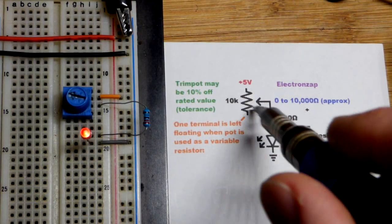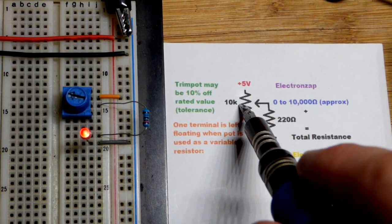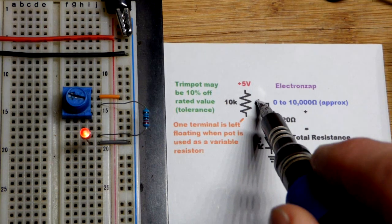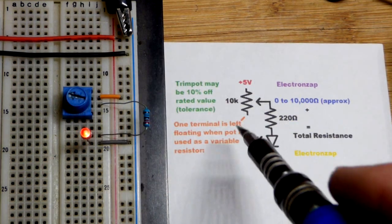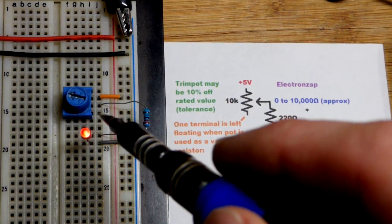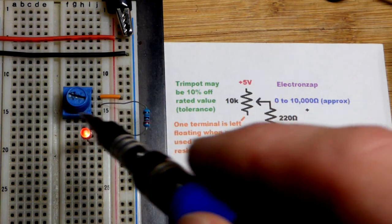Now in this video we're going to look at the variable resistor. So I don't actually have any variable resistors. They would only have two terminals, but the trim pot does the same thing, but it has another terminal.